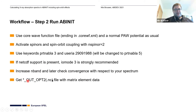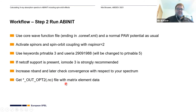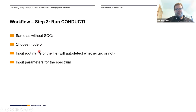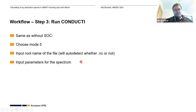Finally, you'll get an output binary file. If you used iomode=3, you have a .nc NetCDF file that contains the matrix element data. If you use NetCDF, you can also use this with other programs — it doesn't have to be ABINIT's own software. The last step is to run Conductee, which works the same way as it used to without spin-orbit coupling. You would choose Mode 5, use the input root name of the file — it will detect and use NetCDF if available — and set the input parameters for the spectrum, such as resolution and smearing.